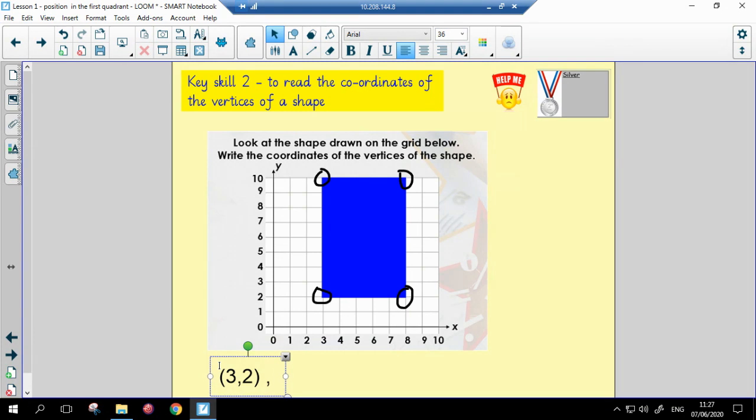If I do top left this time I'm still on 3 on the x-axis but I need to go all the way up the stairs to 10 on the y-axis. Moving to the top right vertices I go along the corridor and I'm now at 8 on the x-axis and I go up again to 10 on the y-axis. And finally bottom right open my brackets I'm still at 8 on my x-axis and 2 on my y-axis and they're all the coordinates for the vertices of the rectangle.